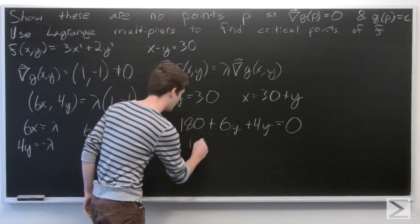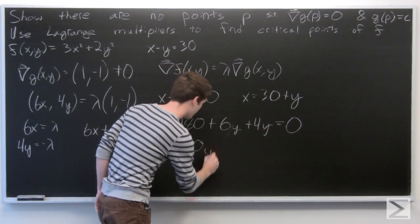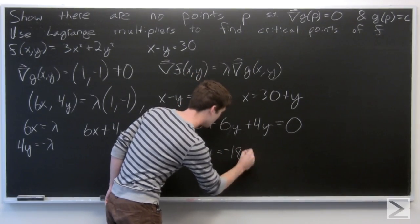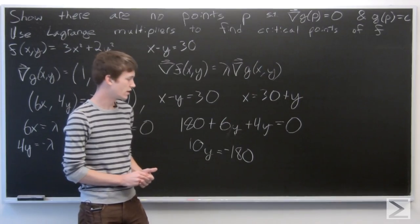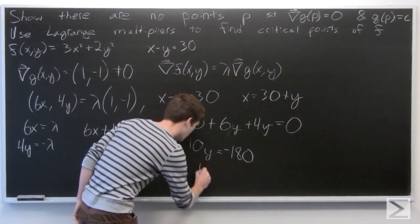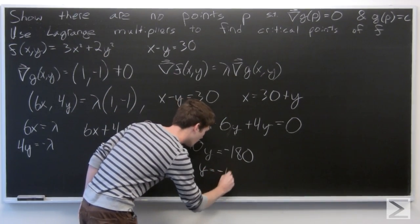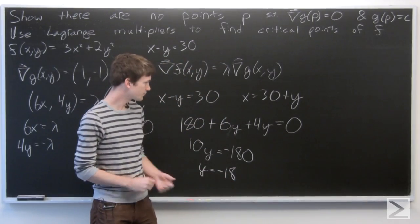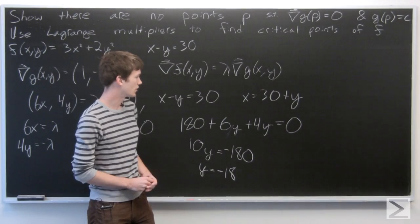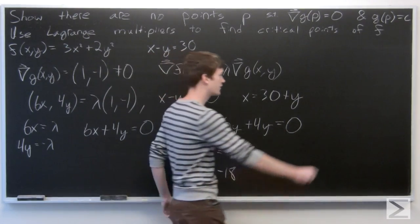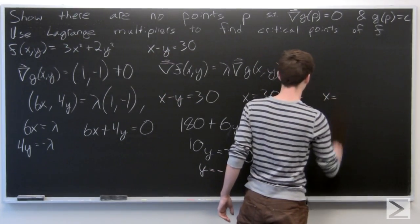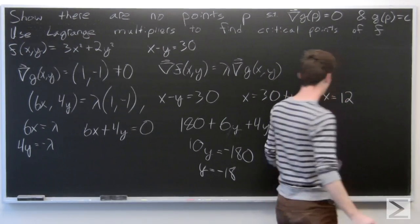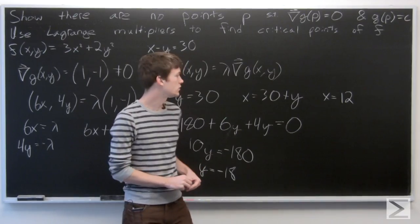So we have 10y = -180, and therefore y = -18. We can plug this into our constraint to find our x value, and we see that x = 12.